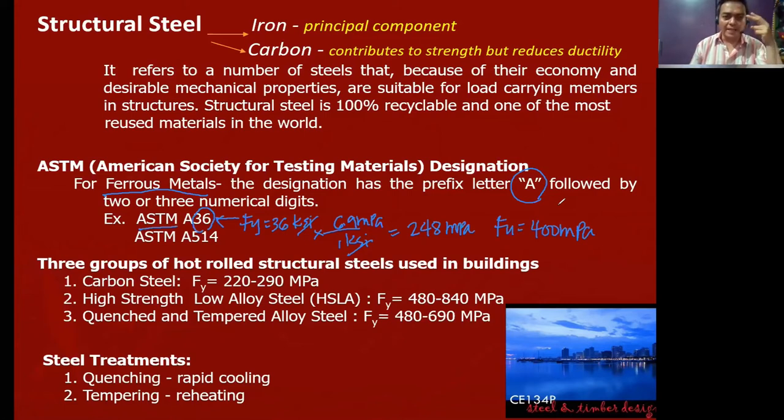Now there are two ways, two types of manufacturing of steel: hot rolling and cold forming. Hot rolled produces structural steel used in buildings. Cold form produces light gauge sections, which are thinner. These are used in smaller structures like residential houses. Hot rolled is the solid steel. Cold form is the light gauge, relatively thinner compared to hot rolled.